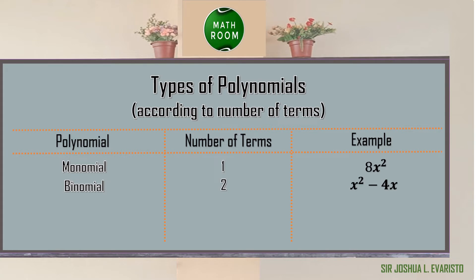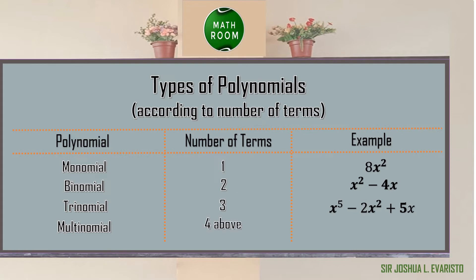A trinomial — from Latin and Greek 'tri' meaning 3 — has three terms, for example x to the 5th minus 2x squared plus 5x. Lastly, a multinomial — from 'multi' meaning many — has four or more terms, for example 6x to the 4th minus x minus 4x squared plus 3.